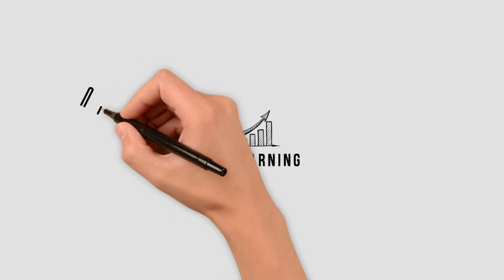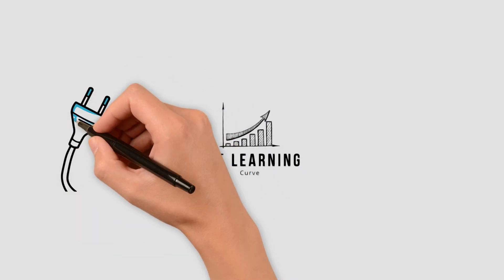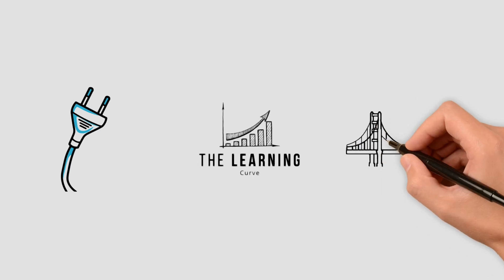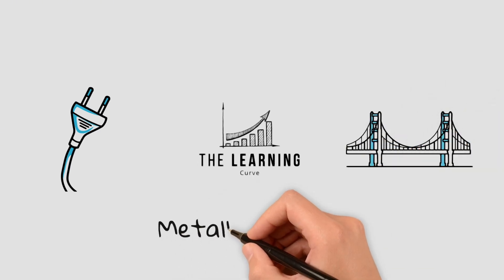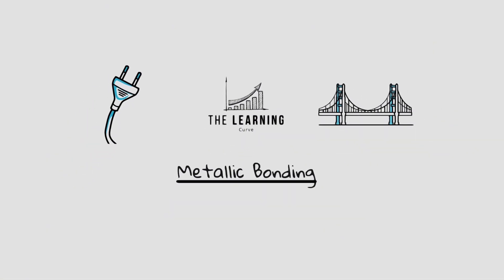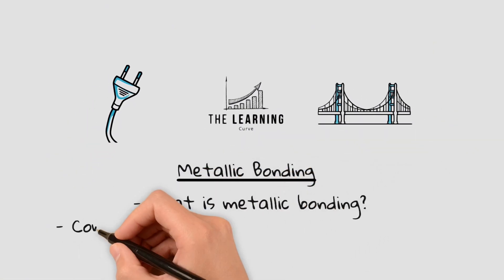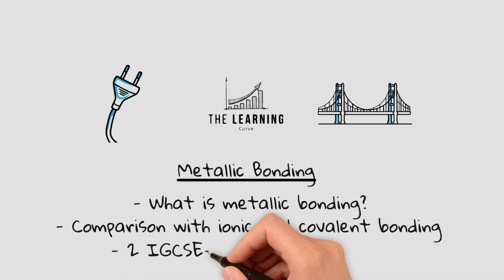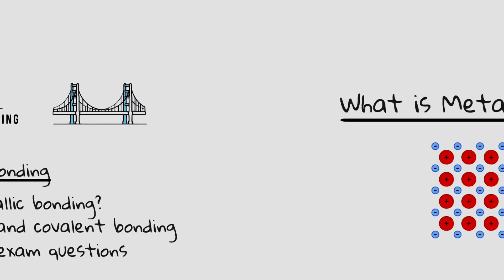Metals are everywhere, from the wires powering your devices to the steel supporting massive bridges. But what makes metal so strong, conductive and flexible? The answer lies in metallic bonding. In today's video we'll break down what metallic bonding is, compare it to ionic and covalent bonding, and go through two IGCSE style exam questions. Let's get started!